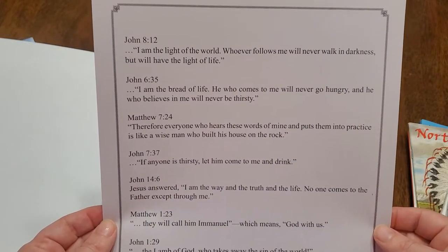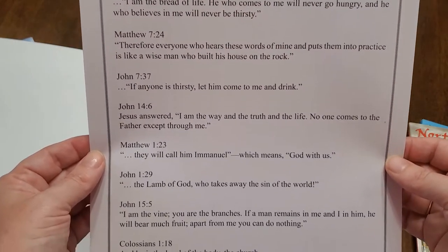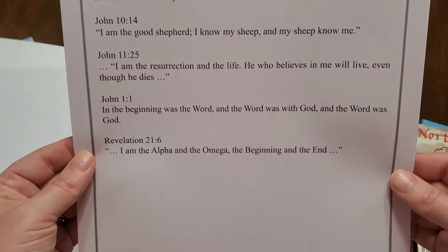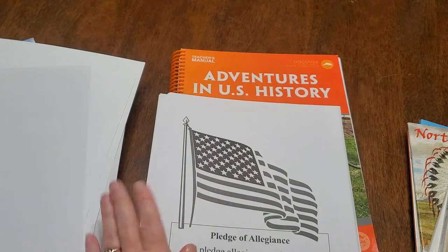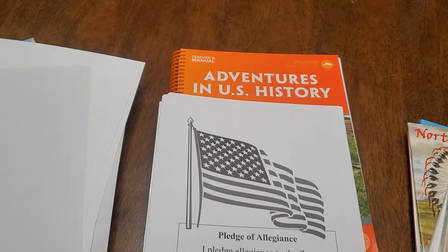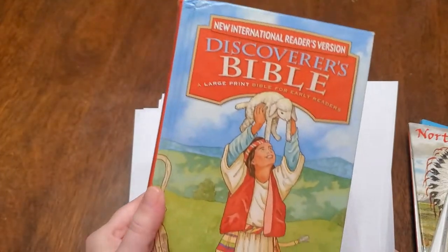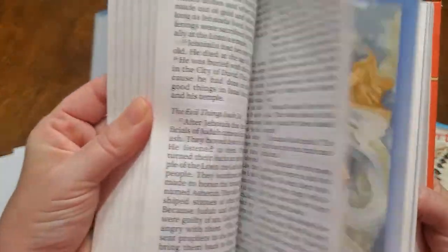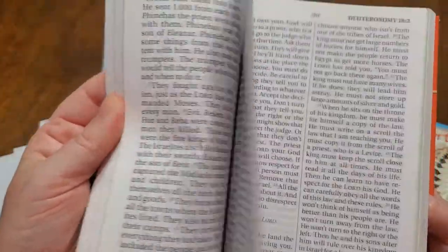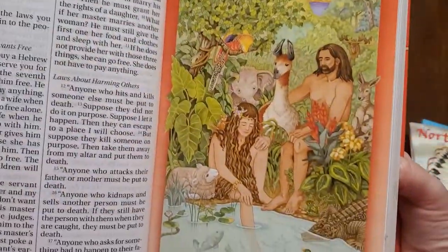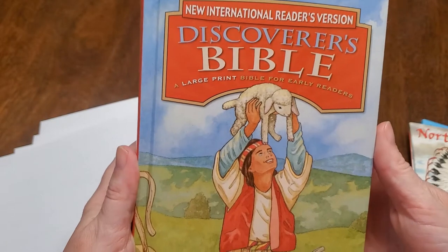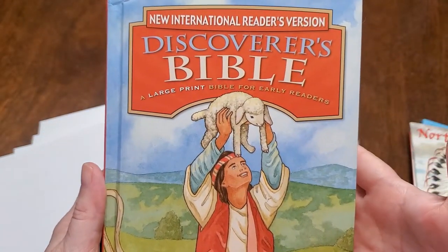Here are the Bible verses or memory verses that you're going to be learning — I like that they have them right here for you, but if you want to look at them in your Bible that's perfectly fine. It comes with a Bible right here, and I'll show you quickly — there are lots of colorful pictures to go along with the stories, and it's big print, which is easier for your second or third graders to read. This is the Bible that comes with your second or third grade curriculum, since it can be used for both.